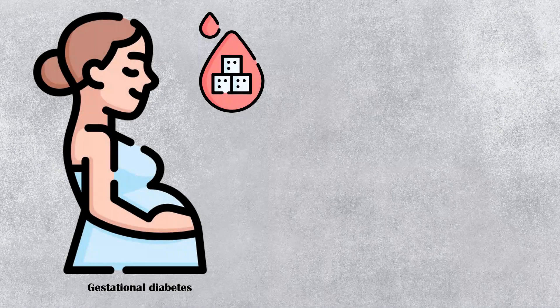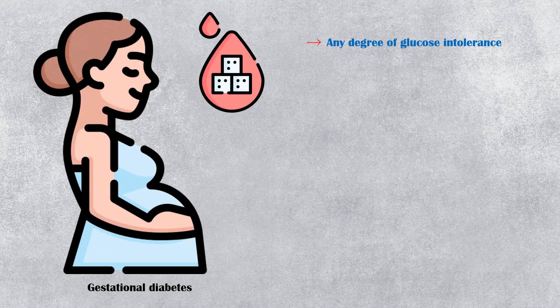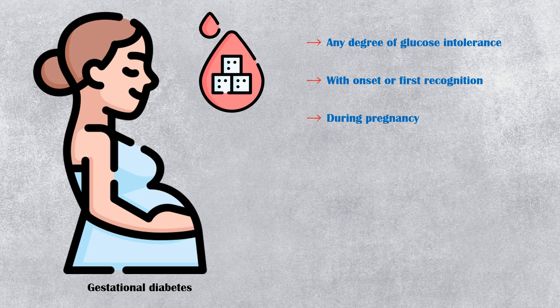Gestational diabetes is defined as any degree of glucose intolerance with onset or first recognition during pregnancy. In simple words, it is a condition characterized by high blood glucose levels during pregnancy, either started or first recognized in the pregnancy itself.